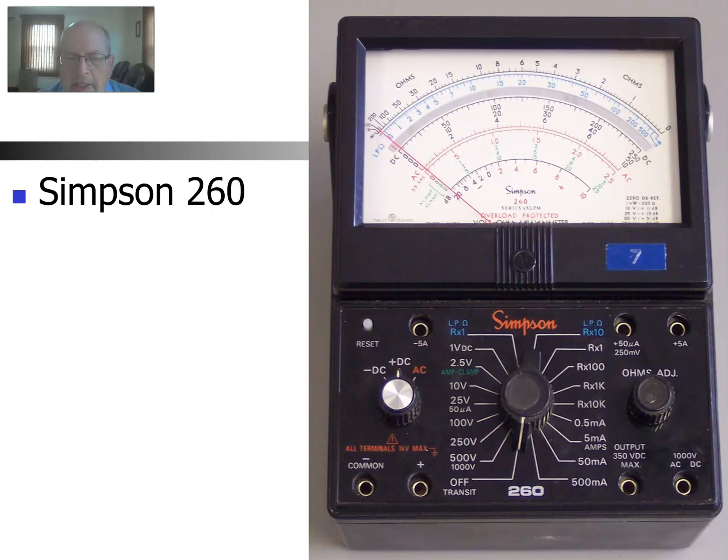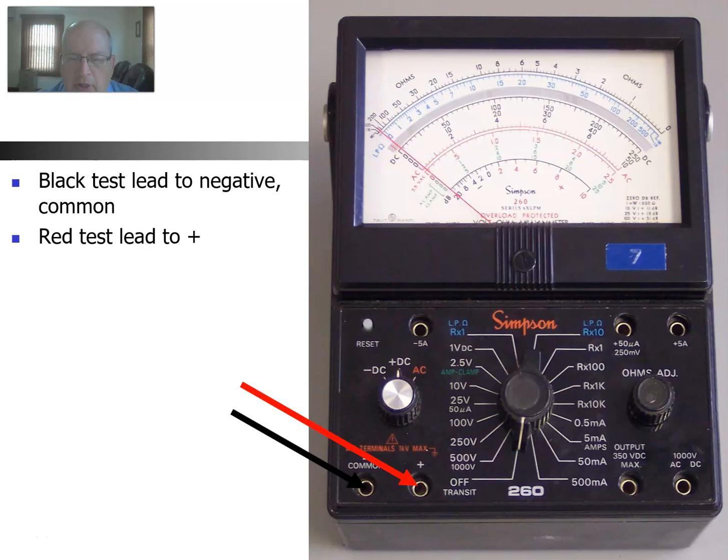In order to utilize this, you plug in two probes and you're going to use the jacks in the lower left of the meter. Typically, we have the negative being the black probe and the positive being the red probe.